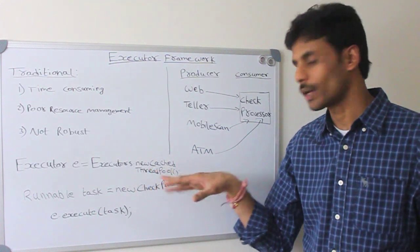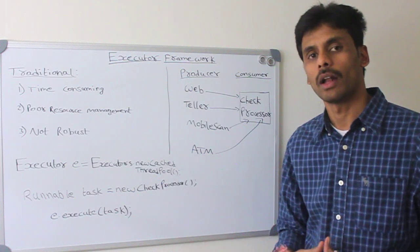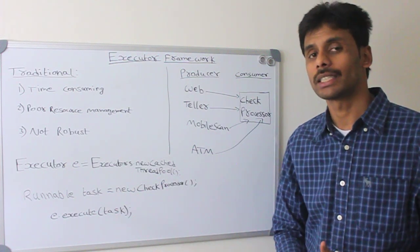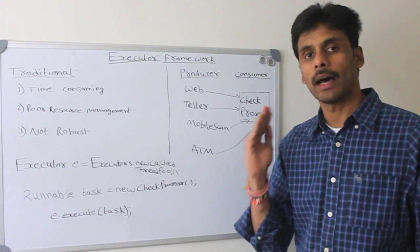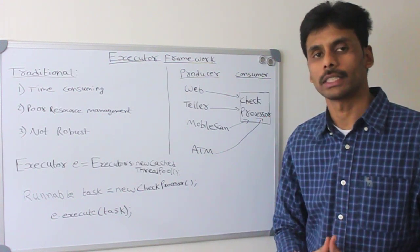Here the example I have is new cached thread pool. It will cache a lot of threads. When I use a fixed thread pool, there is an upper bound on the number of threads that can be created.